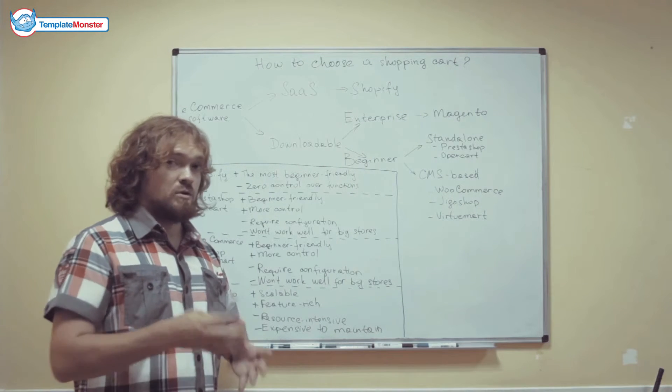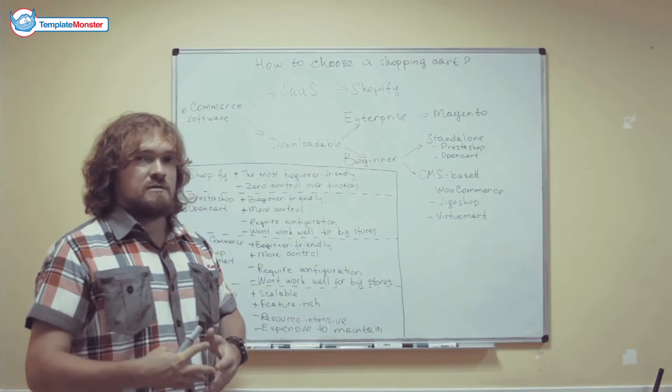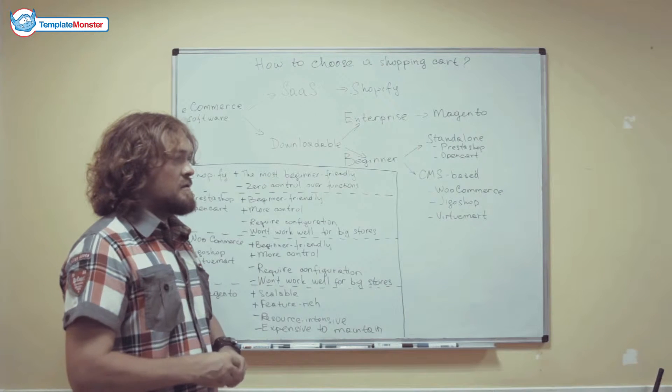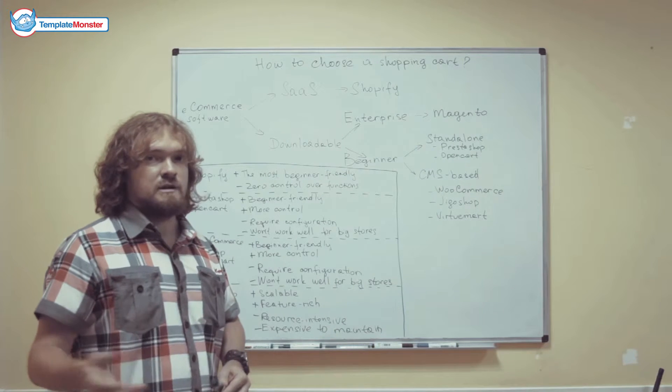That means that you first have to install WordPress and then you install the shopping cart functionality on top of WordPress. The same goes with VirtualMart. The difference is that it's based on Joomla CMS.